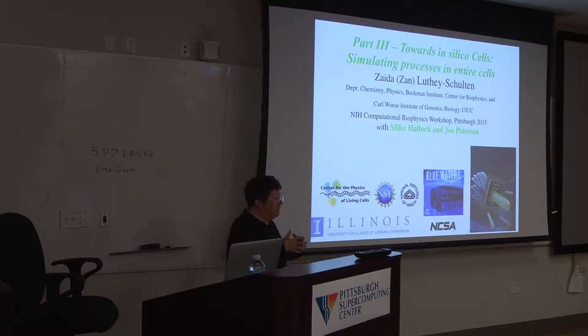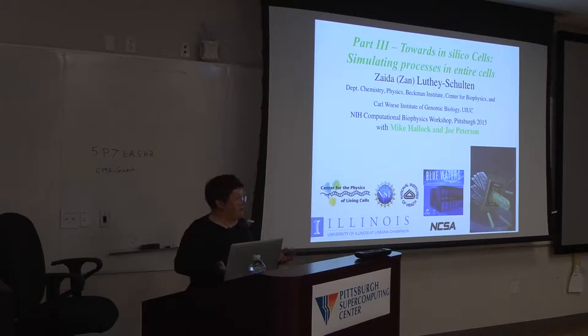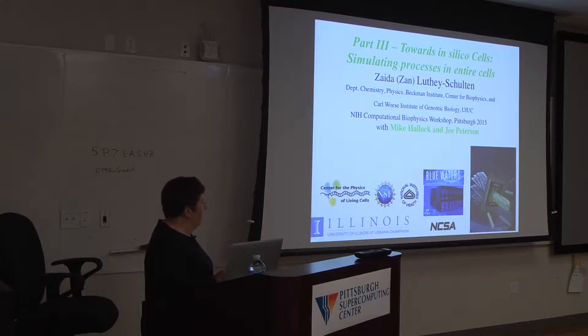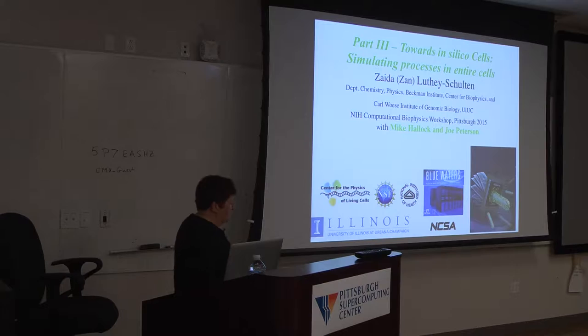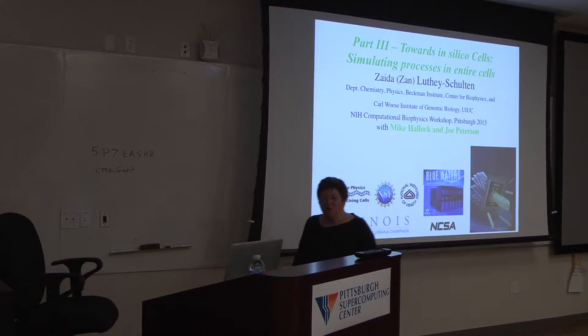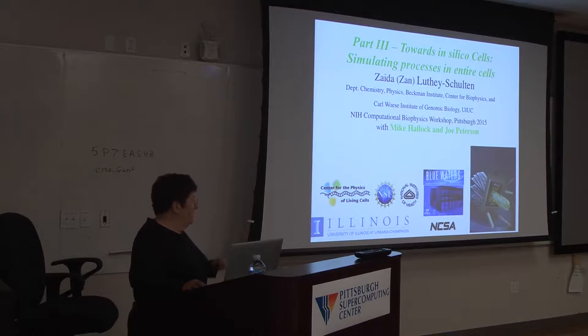We had done MD on all the components involved in translation. But there are 3,000 ribosomes in a slow-growing cell — how are we going to put that into the cell? A fast-growing cell has around 50,000 ribosomes. So how are we going to address those problems? You're going to see how we addressed it. We're really thankful to these guys that they allowed us to have student accounts to do this.